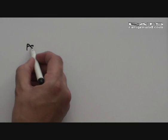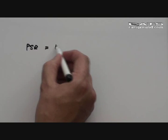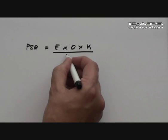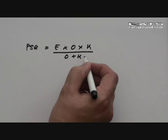The formula for point of safe return is endurance multiplied by ground speed out multiplied by ground speed home all over ground speed out plus ground speed home.